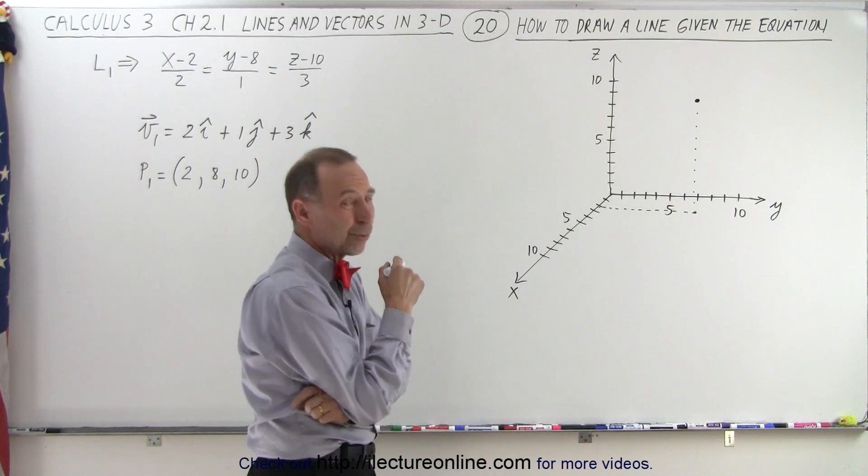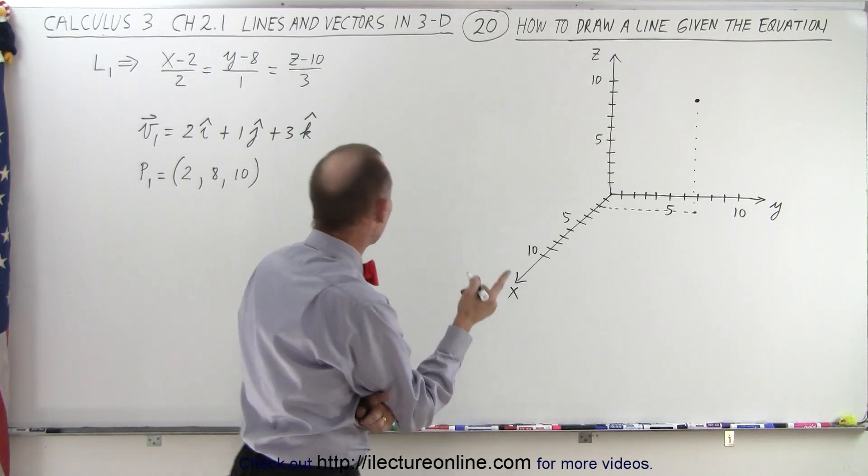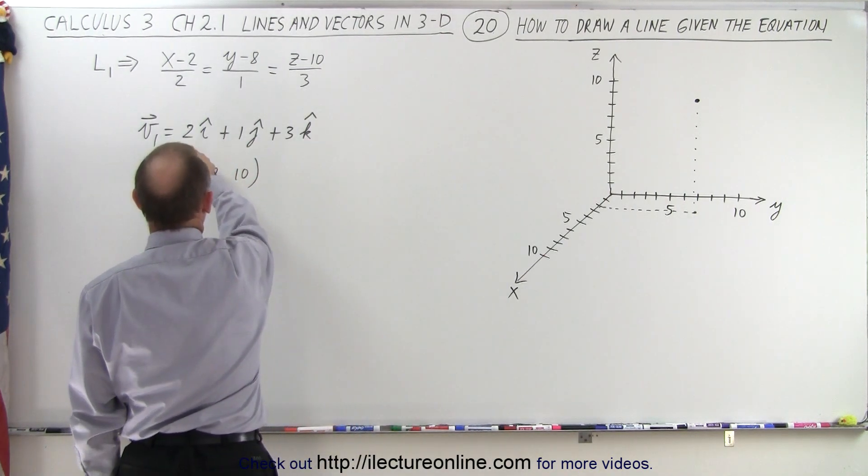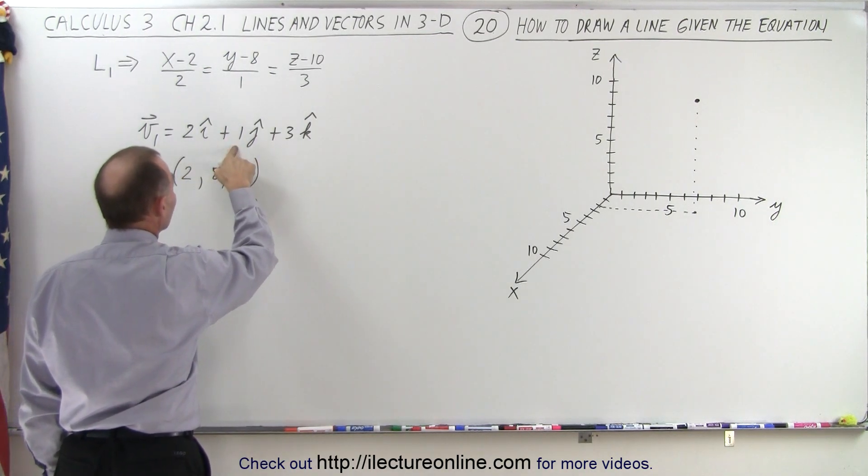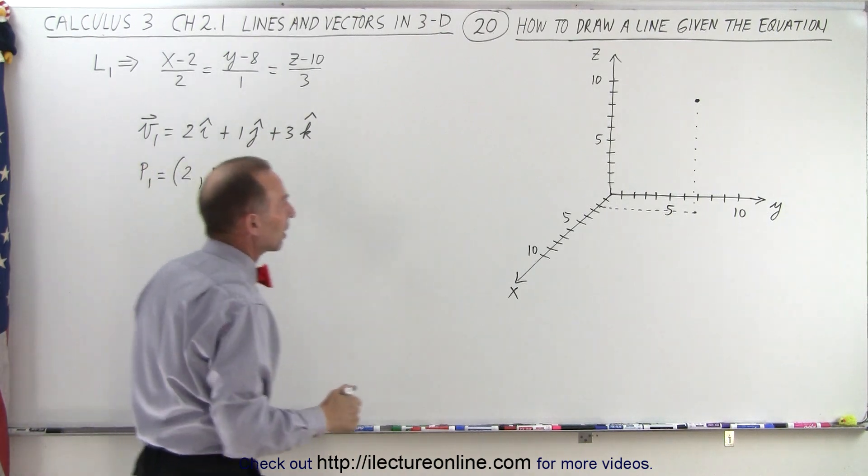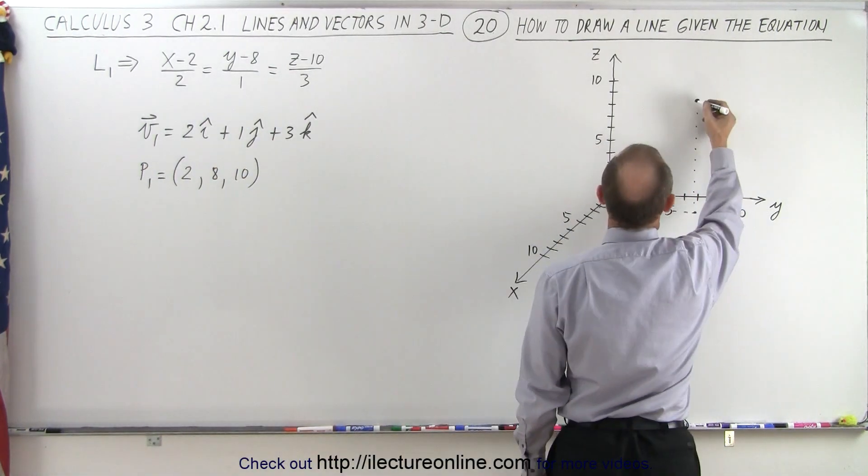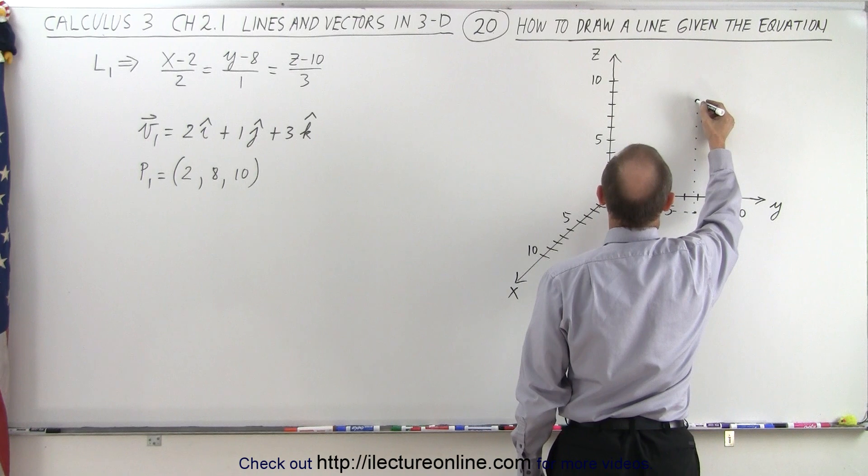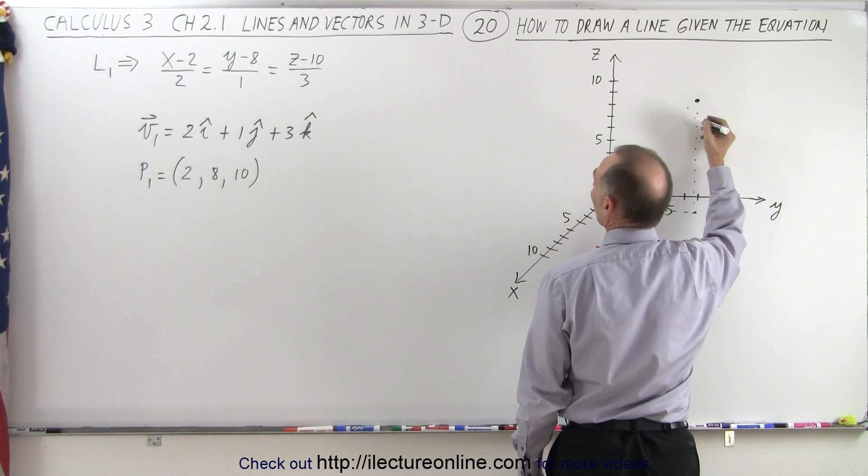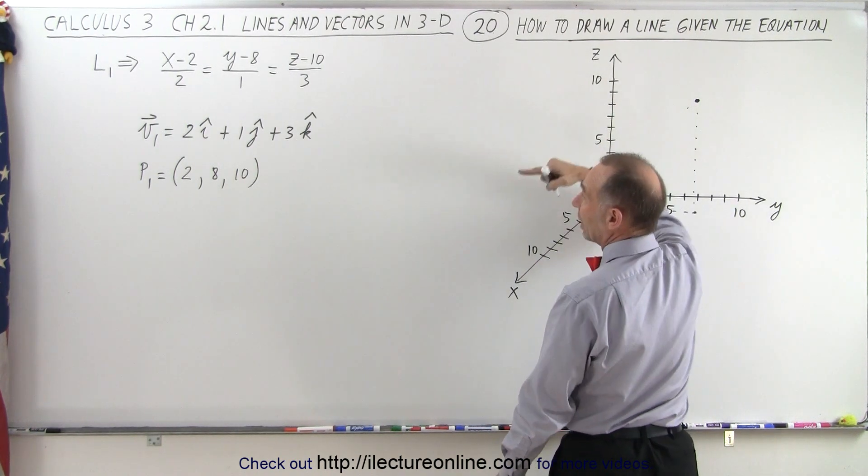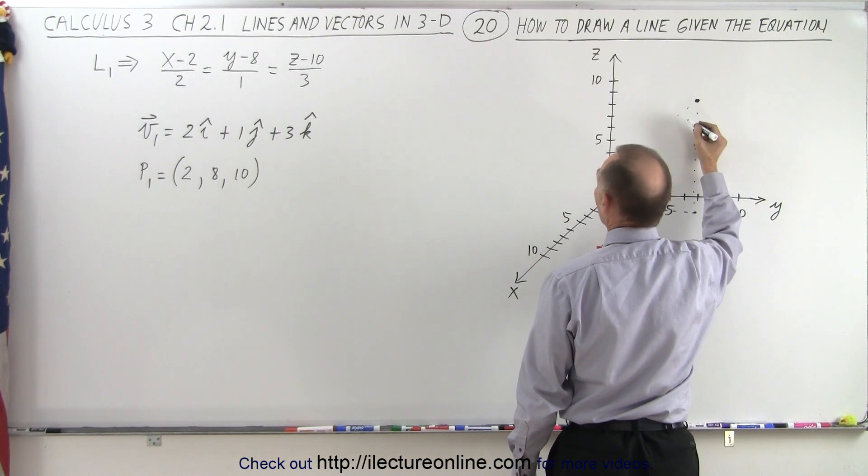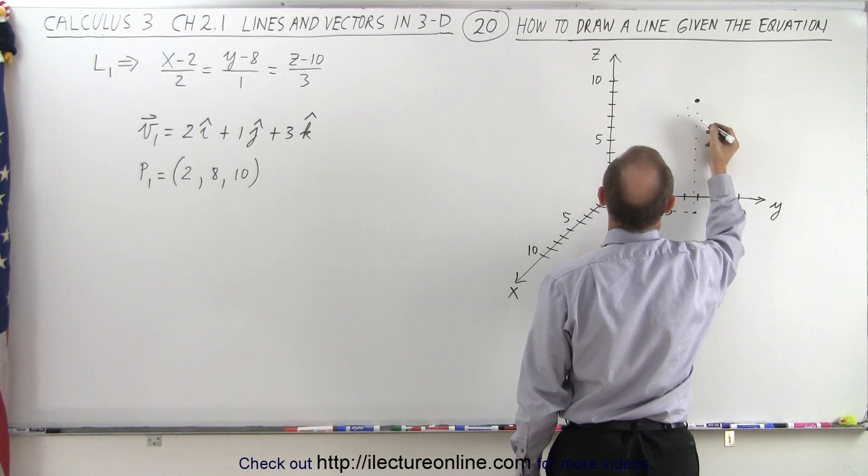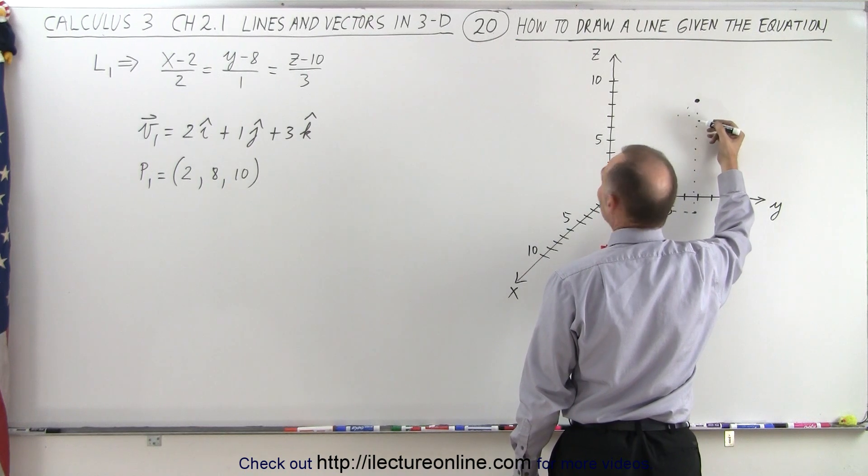But what direction does the line go? Well for that we use the parallel vector. That means we can find another point by adding 2 in the x-direction, 1 in the y-direction and 3 in the z-direction. So let's do that. We're going to add 2 in the x-direction, so that's 1, that's 2.